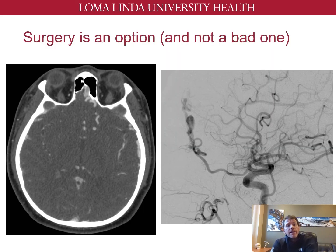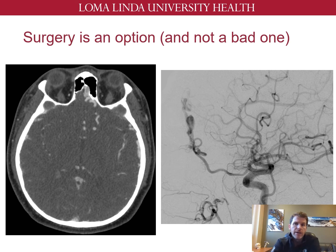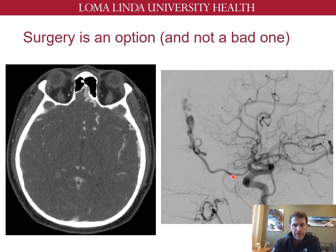Surgery is still an option in fistulas that can't be reached through an endovascular route. In some locations, surgery is actually favored when the endovascular route has a high risk of neurologic deficit, such as in anterior cranial fossa fistulas primarily fed by distal branches of the ophthalmic artery, where reflux of embolic material can block the central retinal artery and lead to monocular blindness. On CTA, the telltale signs of this anterior cranial fossa dural AV fistula are dilated veins near the cribriform plate, again fed by distal branches of the ophthalmic artery.